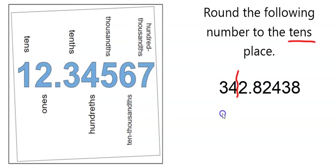So we're going to do the exact same thing as before. We're going to keep everything to the left of it, and to the right we want to see, is that number 5 or greater? It is not, so that 4 is just going to stay a 4.